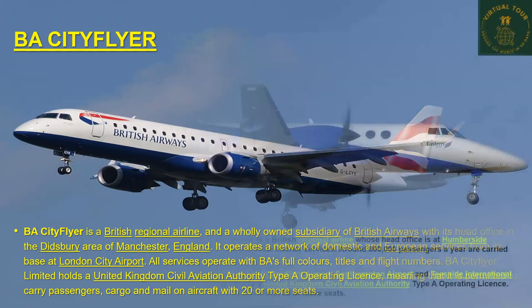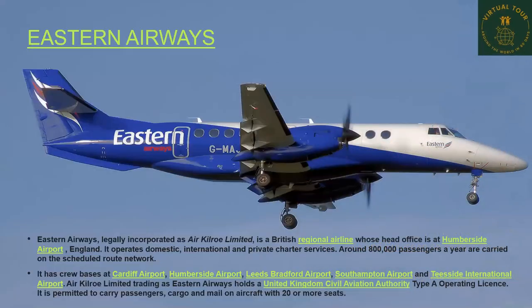Next is Eastern Airways, legally incorporated as Air Kilroe Limited, a British regional airline whose head office is at Humberside Airport, England. It operates domestic, international and private charter services. Around 800,000 passengers a year are carried on its scheduled route network. It has crew bases at Cardiff Airport, Leeds Bradford Airport, Southampton Airport and Teesside International Airport. Air Kilroe Limited, trading as Eastern Airways, holds a UK Civil Aviation Authority type A operating licence, permitting it to carry passengers, cargo and mail on aircraft with 20 or more seats.